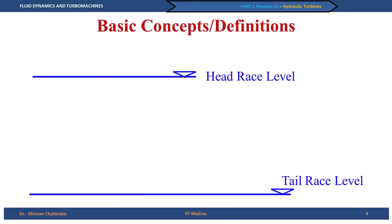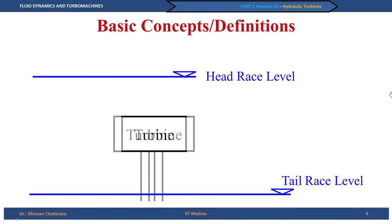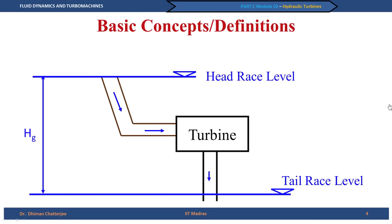We can say there is a headrace level — nothing but the reservoir — and a tailrace level on the downstream side of the turbine. In between, we have a turbine installed with a penstock piping system bringing the water through. The geodetic level difference between the headrace level and the tailrace level is the head available, called the gross head H_G.